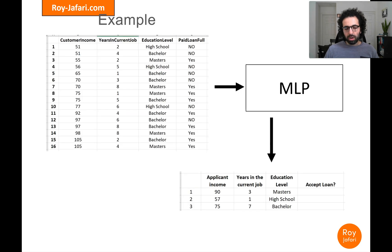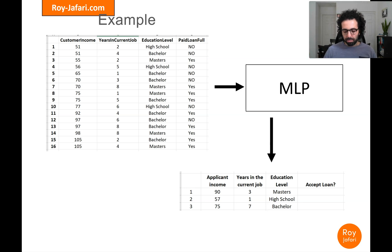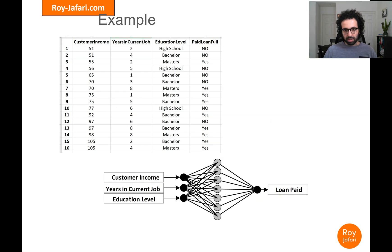This is the example we want to solve — the same example we've seen when we were talking about Decision Tree, Naive Bayes, and KNN. Now we want to do this with MLP. So what are the challenges? What's stopping us from connecting customer income, years in current job, and education level as input neurons and loan paid as the output?